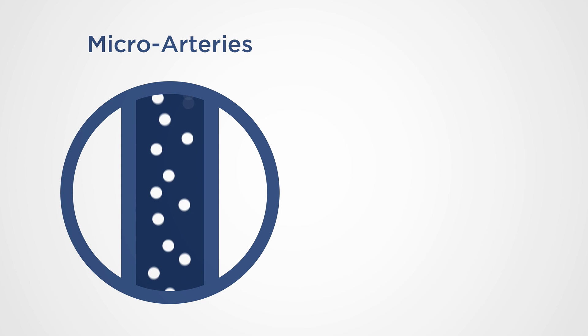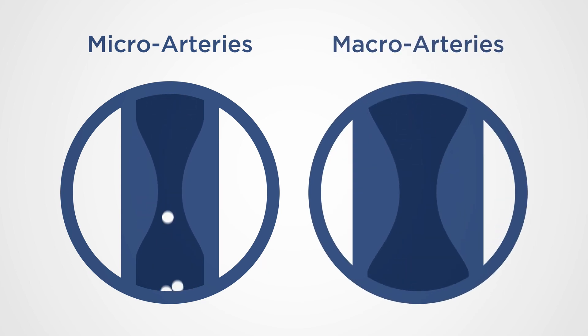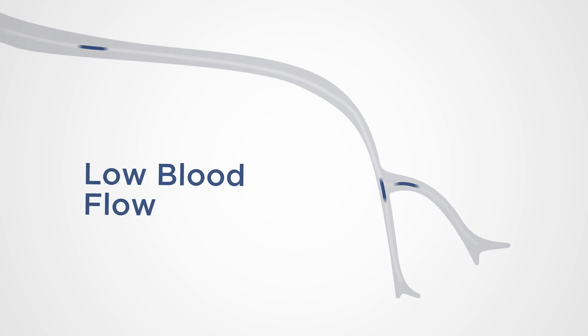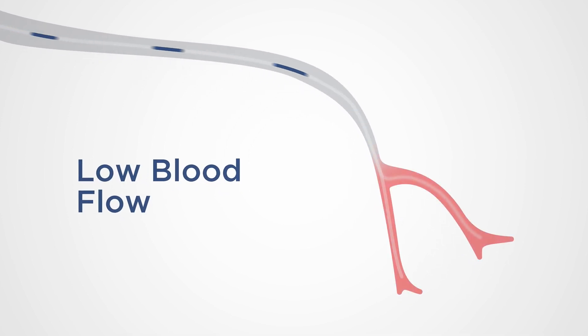Diabetes causes narrowing of micro and macro arteries — the big arteries and the small arteries. That narrowing and the decrease in blood flow leads to ischemia of the nerve, meaning low blood flow to the nerve, and that damages the nerve. We understand now that that's the mechanism whereby neuropathy gets worse. Anybody who has neuropathy and is older than 55 needs to have a peripheral vascular evaluation, because it may be contributing to their disease.